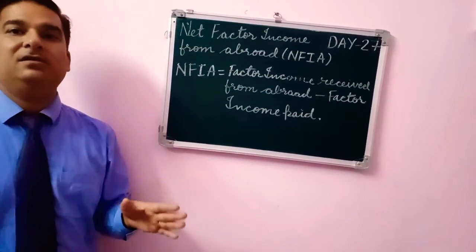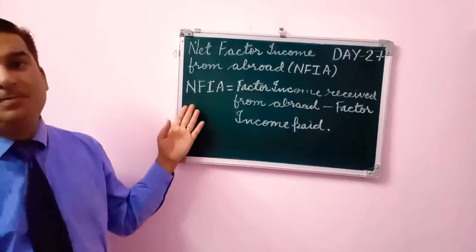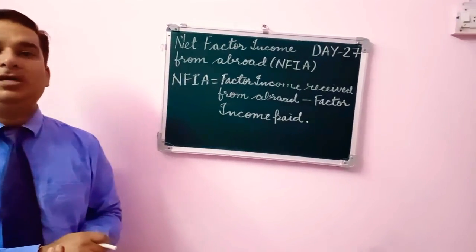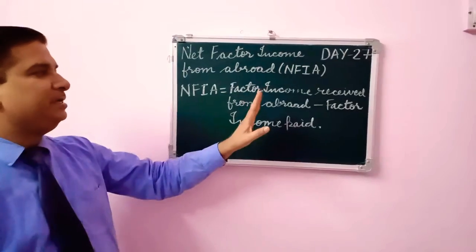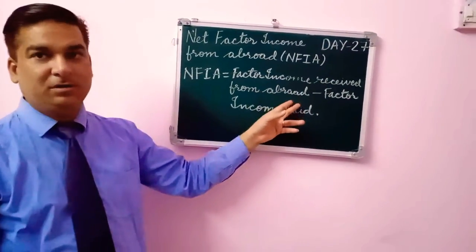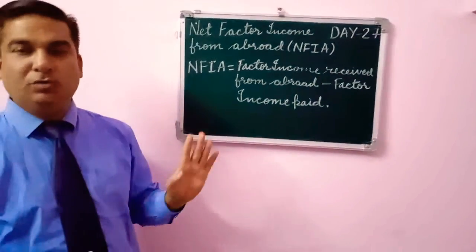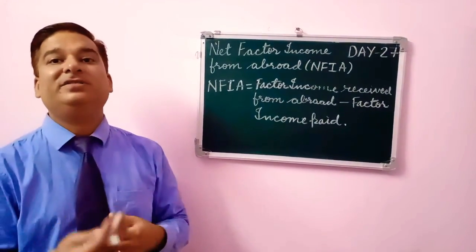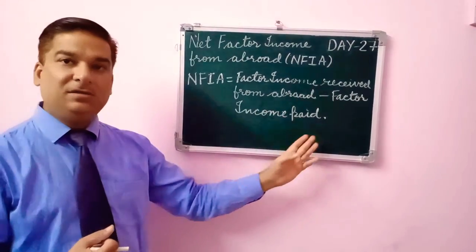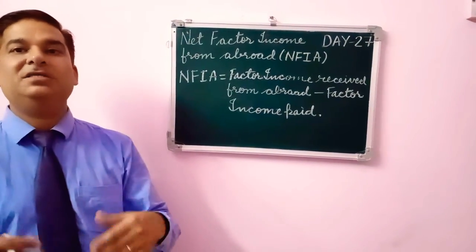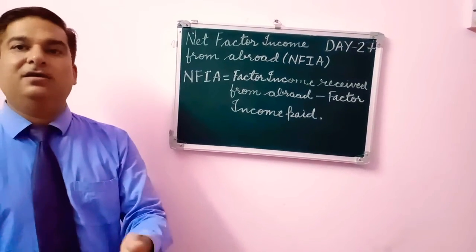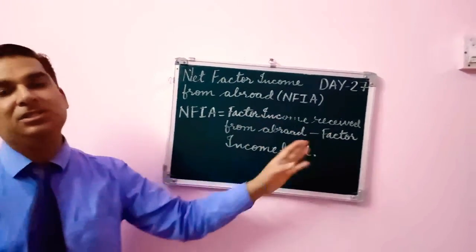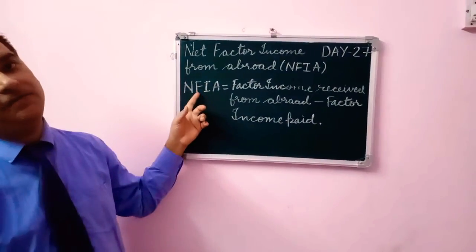NFIA is needed in the calculation of national income. We need to know the net income to include in national income. The meaning is: factor income received from abroad minus factor income paid. The factor income paid represents what we have paid to foreign people for the services they have given us. The difference is the net factor income from abroad.